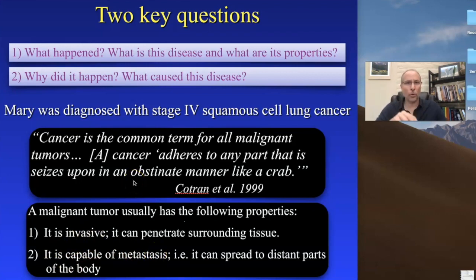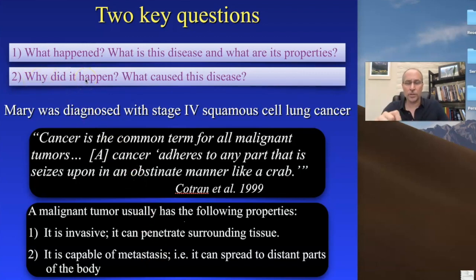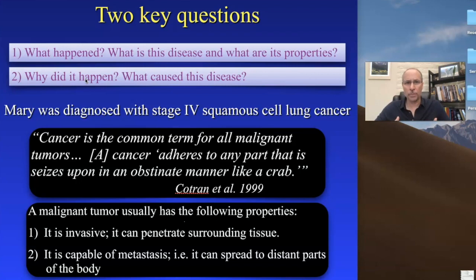There's a second question we have to deal with: why did this arise? Why did this happen in Mary's body? Why does it happen in our patients' bodies? What is it that causes it? That's called the etiology of the disease. We're going to get into both of those questions, starting with just understanding the disease in a general sense.